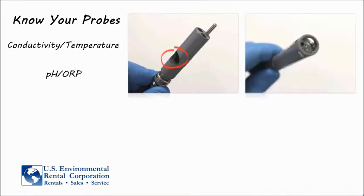Next, we have the combination pH and ORP probe. You'll notice that there are two bulbs at the bottom of this probe. The larger bulb is used for pH readings, and the smaller bulb takes ORP readings.